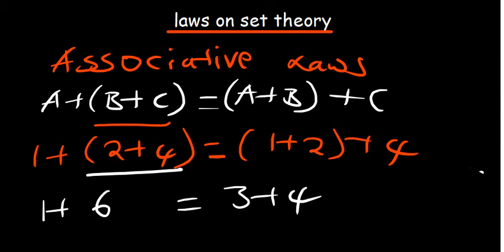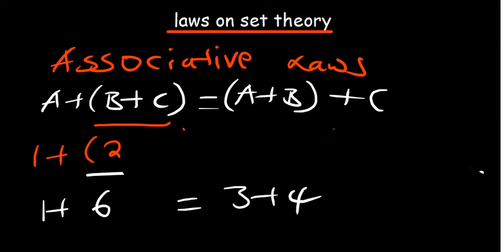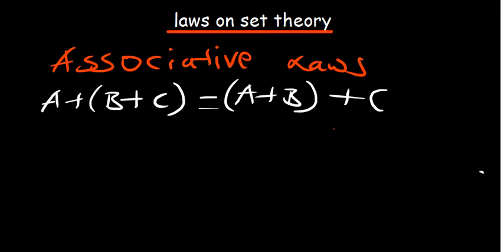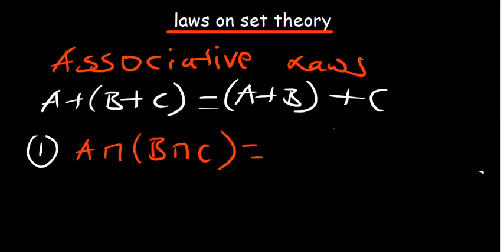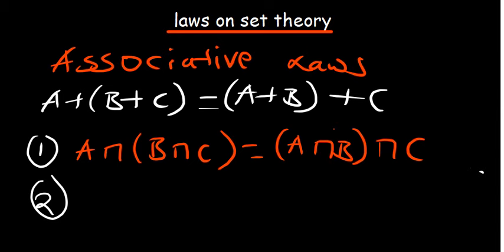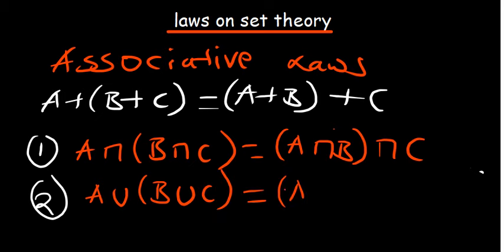Associative laws have two forms under set theory. The first is: A intersection (B intersection C) is the same as (A intersection B) intersection C. The second applies to union: A union (B union C) is the same as (A union B) union C. These are the two associative laws we need to understand.